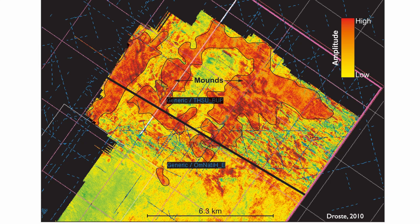This is a beautiful seismic amplitude map by Hank Droste, published in 2010, where the mounded structures at the TST are quite visible.